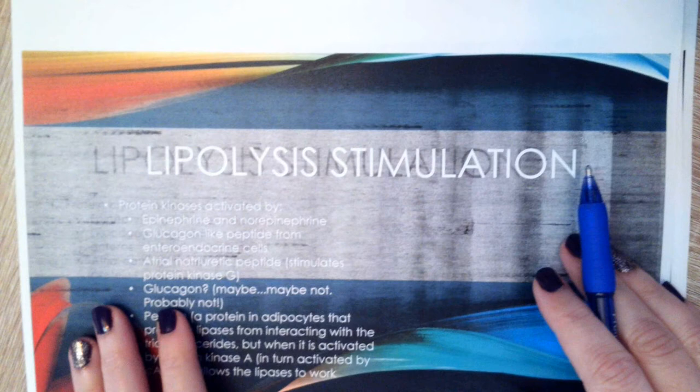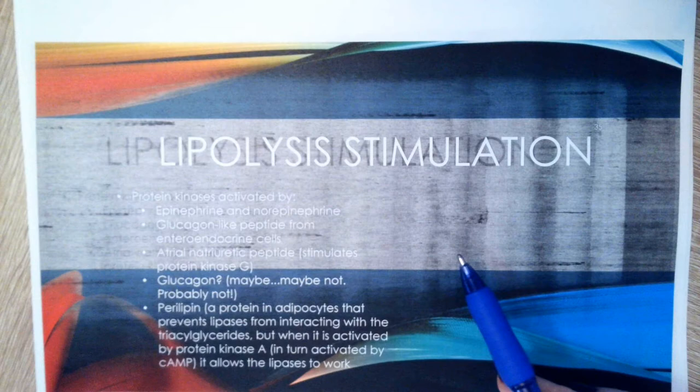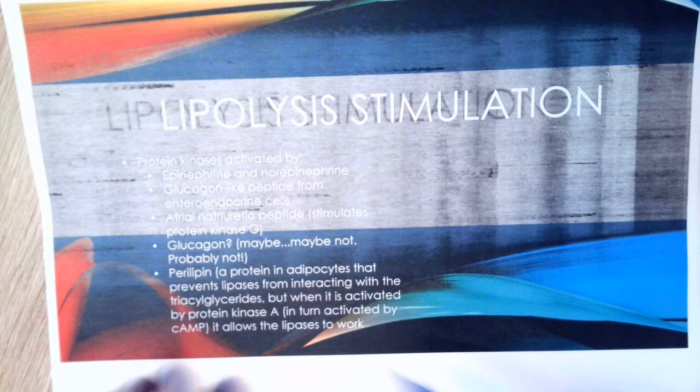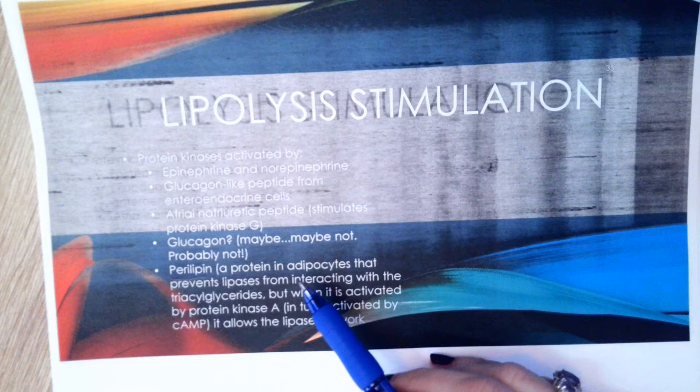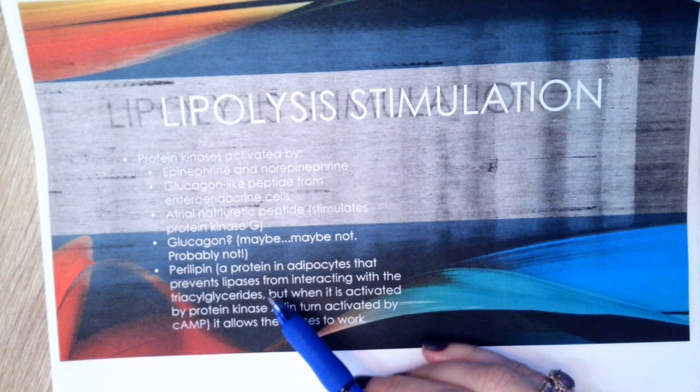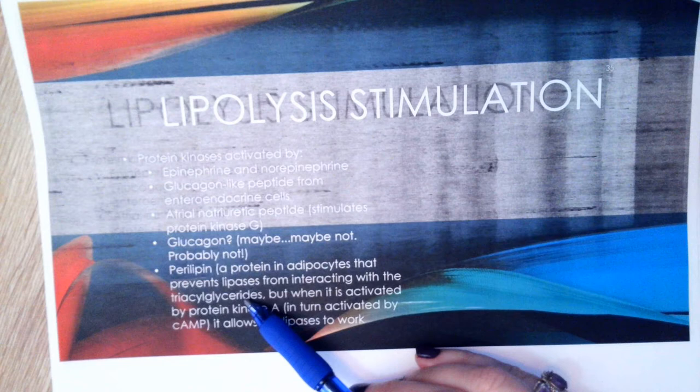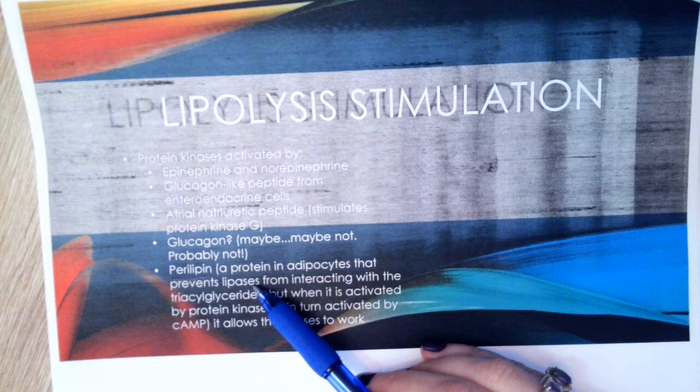The first thing we need to think about is where those fatty acids are stored, which is in adipocytes. In the adipocyte, there is a protein called perilipin. Perilipin is in the fat cell and it binds with the fats — the fatty acids, the triacylglycerides, which is how they're typically stored in adipocytes. Perilipin is going to prevent the enzymes that break down fats, which are called lipases, from breaking them down.